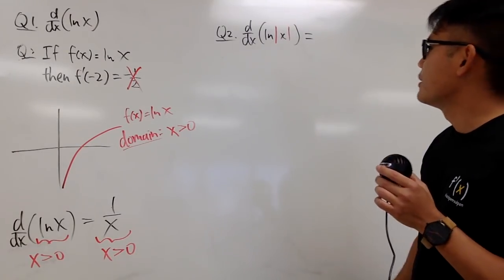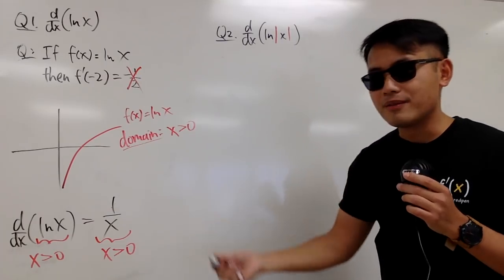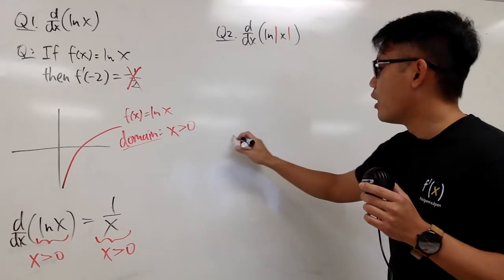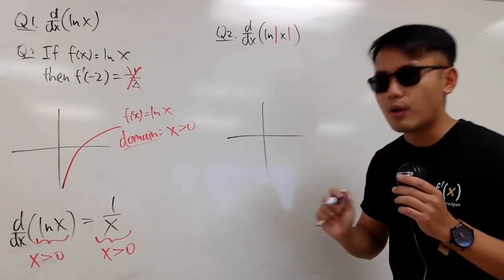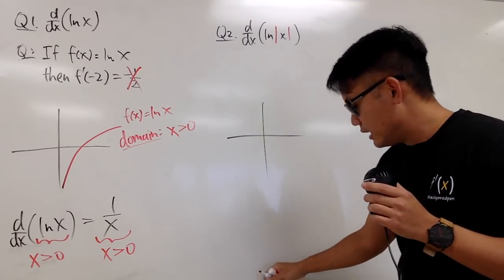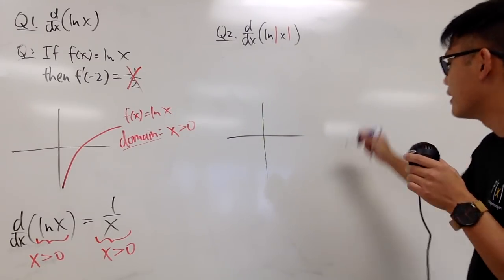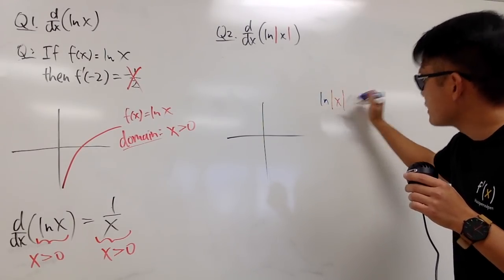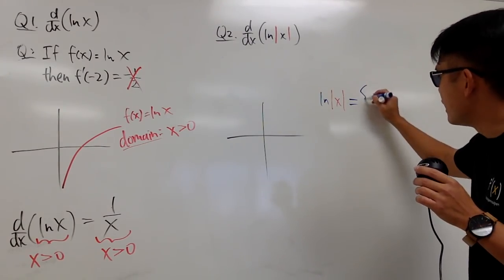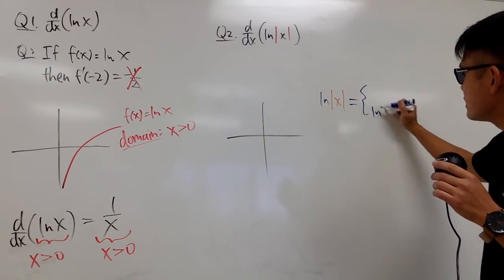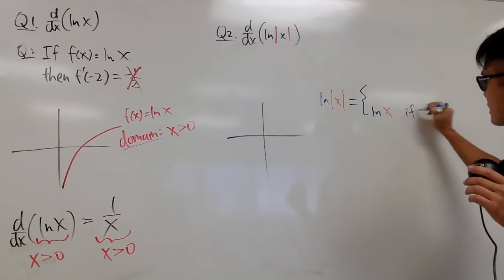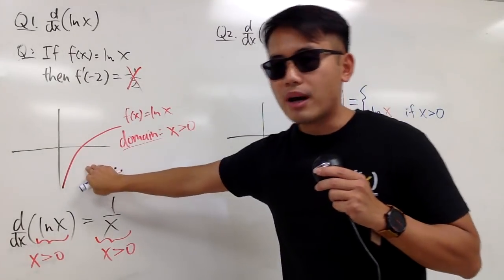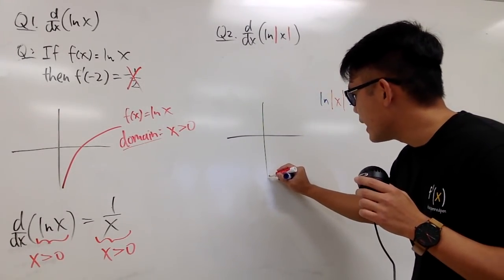Now let's look at ln of absolute value of x, using the graph first. We can use the piecewise definition. ln of absolute value of x is the same as ln of x if x is greater than 0, since the absolute value doesn't change positive values.